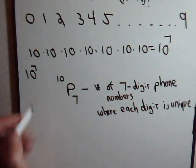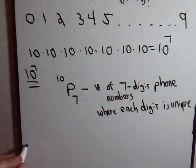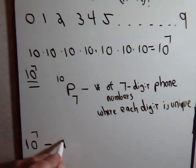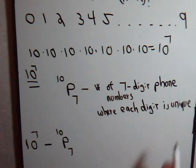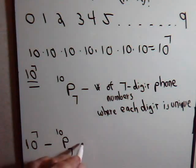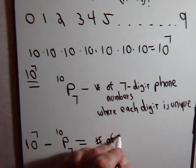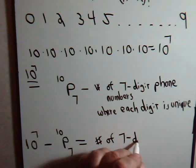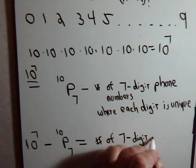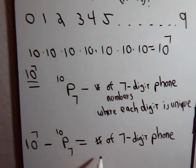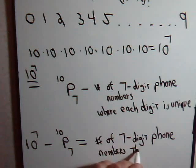There are no repeat numbers here. Well then, the total number of telephone numbers we have is this minus this, the number of telephone numbers where all the digits are unique. That would equal the number of seven digit phone numbers that have repeat numbers.